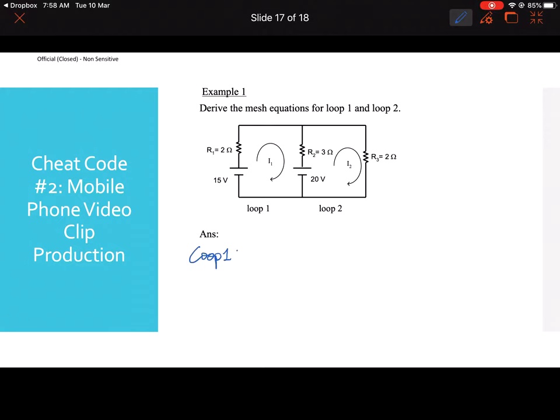You can write down KVL around the loop with all the voltages combined, added up to be 0. So 15 minus 2I1 minus 3(I1 minus I2) minus 20 equals 0, and you can proceed to write loop 2.